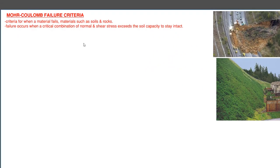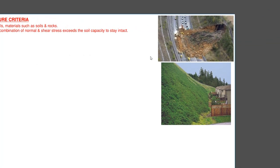And the basic idea behind this criteria is that there's a certain combination or critical combination of normal and shear stress that occurs within the soil, which causes it to fail. Once those stresses exceed beyond what the soil is able to withstand, a failure such as this can occur.